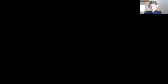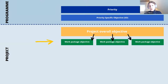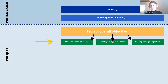When you know your project overall objective, it is time to start thinking about the next step, which are the work package objectives. The work package objective reflects the smaller steps towards reaching your project overall objective. In other words, the accumulated effect of the achievement of the work package objectives should be the achievement of your project overall objective. With the work package objectives, we actually come closer to the work packages and the actual activities of your project.